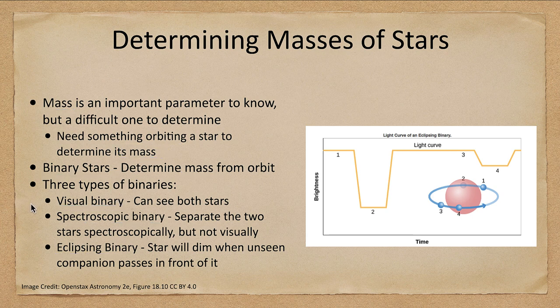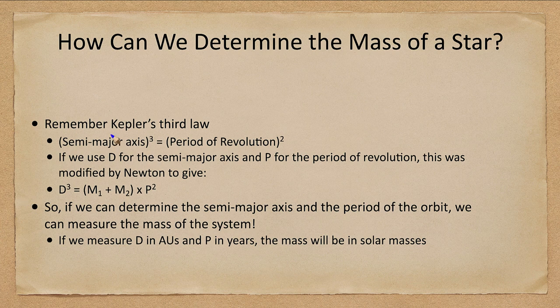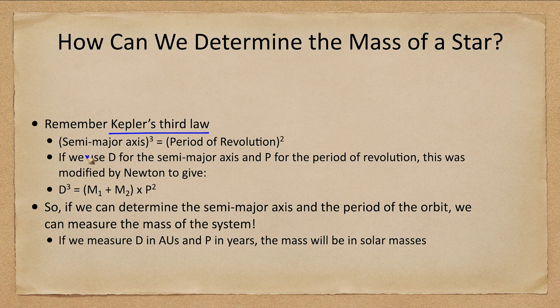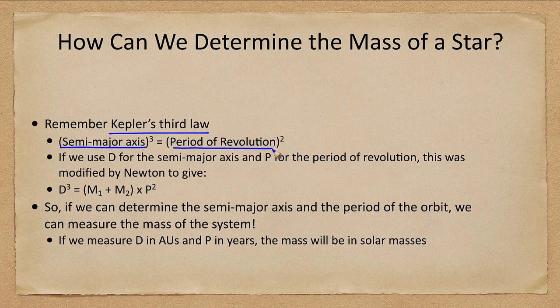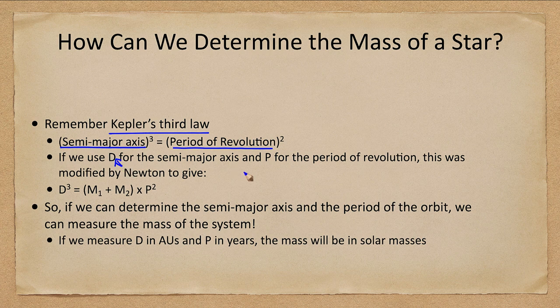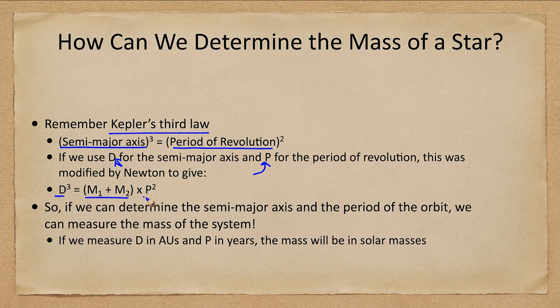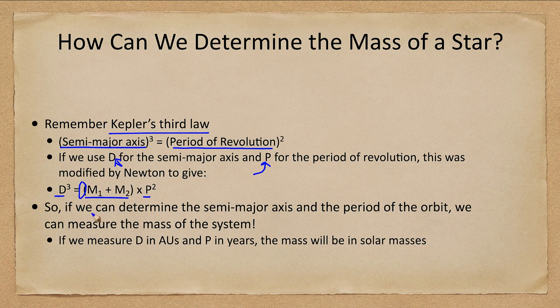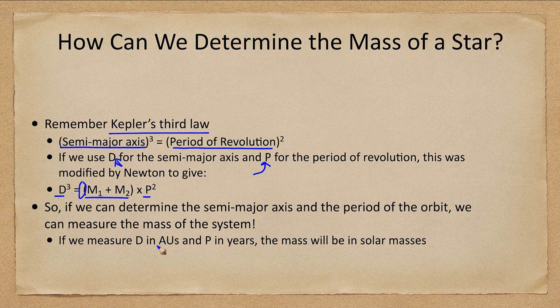Now how do we determine that mass? Well we go back and remember Kepler's third law from an earlier lecture. Kepler's third law stated that the cube of the semi-major axis was equal to the square of the period of revolution. If we use D for the semi-major axis and P for the period of revolution, Newton tells us that D cubed equals the sum of the masses times P squared. Now actually there's a constant out here that we are not going to worry about.